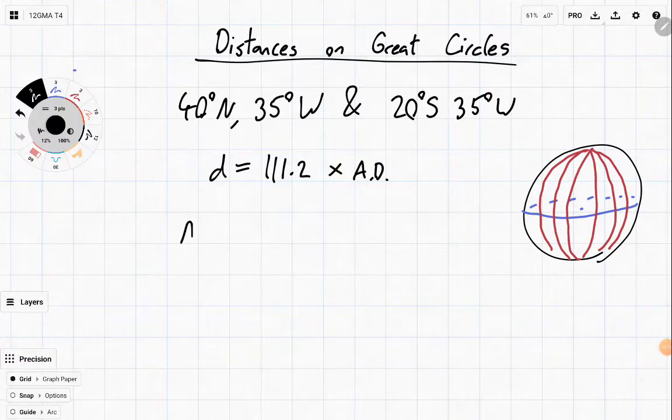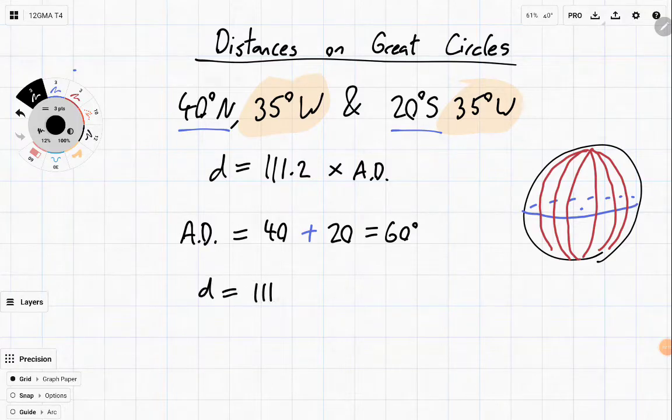Step one, we need to work at the angular distance. We don't know that yet. So let's have a look. Now, how do we know we're using this one? Well, the reason we know that is because, since they're on the same line of longitude, they both have the same longitude coordinate, that means we are going to be using this one. And since they're different, we're going to be adding for the angular distance. So 40 plus 20 equals 60 degrees. And so the distance is equal to 111.2 times 60, which is equal to 6,672 kilometres.